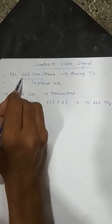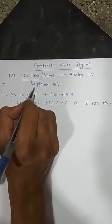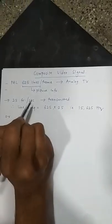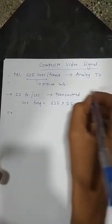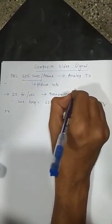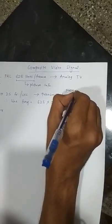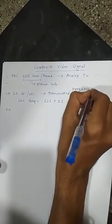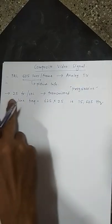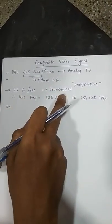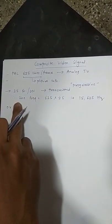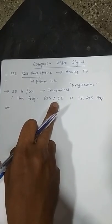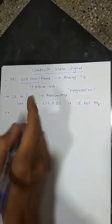That means there are 625 lines which carry picture information per frame. In case of progressive scan, 25 frames per second are transmitted. Therefore, line frequency comes out to be 625 into 25, that means 15,625 Hz.